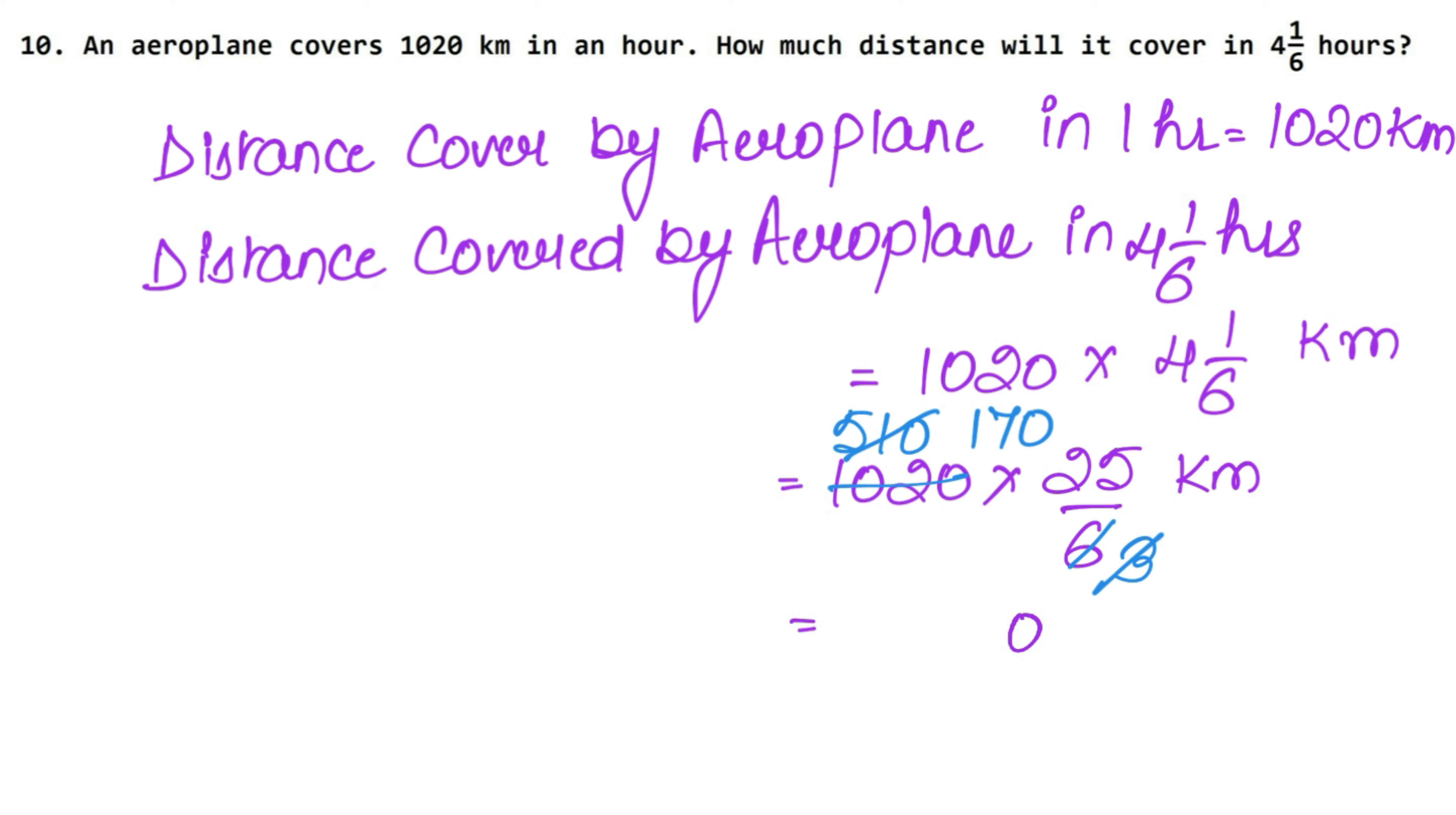Now we'll multiply both. So this will be 0 as it is and 25 into 17. 7, 5s are 35, 3 carry. 7, 2s are 14, 15, 16, 17, 5 and 2. So this becomes 5, 12 carry 1 and 4. So answer is 4250 km. So this means in these many hours, aeroplane will cover 4250 km distance. That is 4250 km is the answer. Let's do next question.